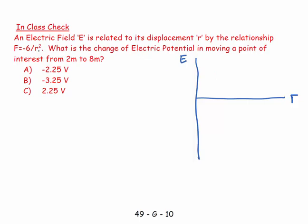We can plug in some numbers. When R is 0, the field is at negative infinity — way down here. When R is 1, this is at minus 6. When R is 2, that becomes minus 6 over 4, which is minus 1.5. When R is 3, that would be minus 6 over 9, which is minus 2/3. So the graph looks like this, and we're trying to find the change in potential when we go from a point 2 meters away to a point 8 meters away.